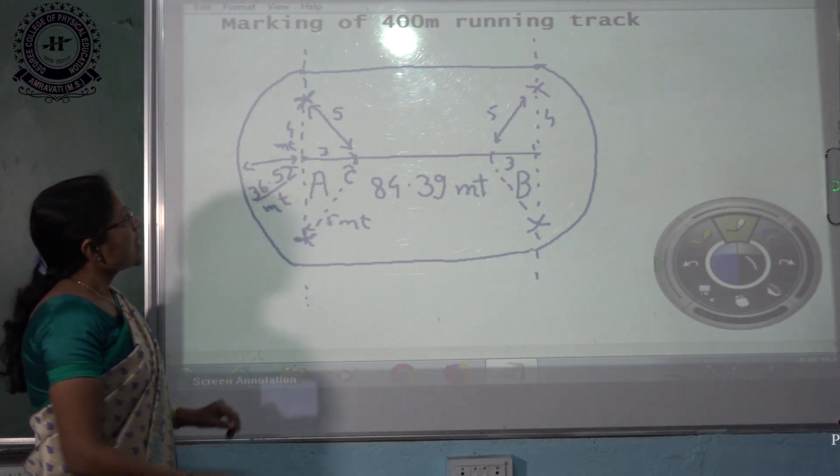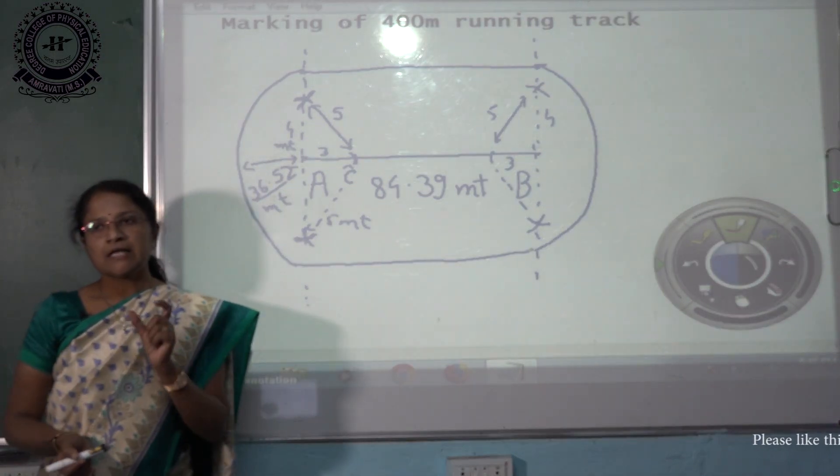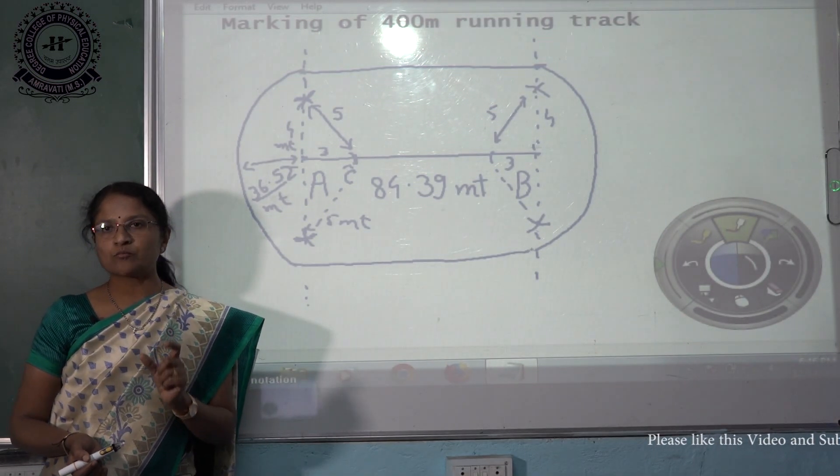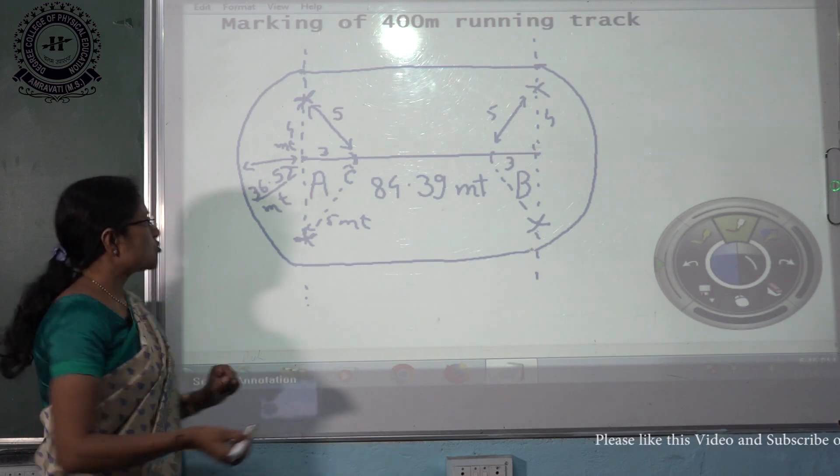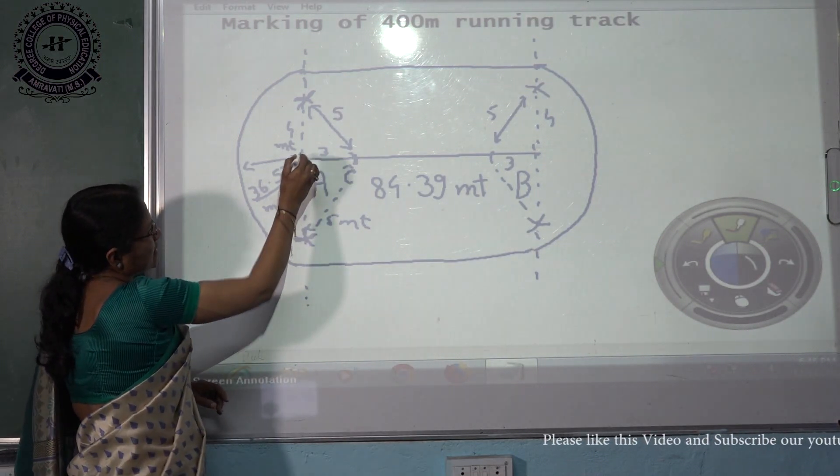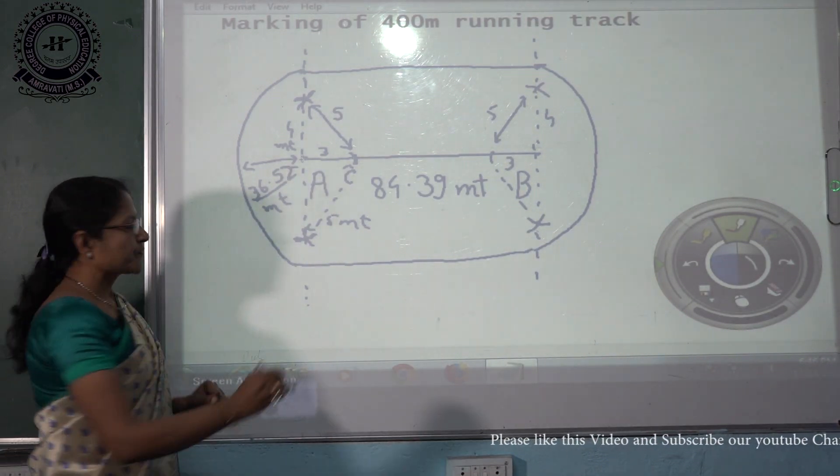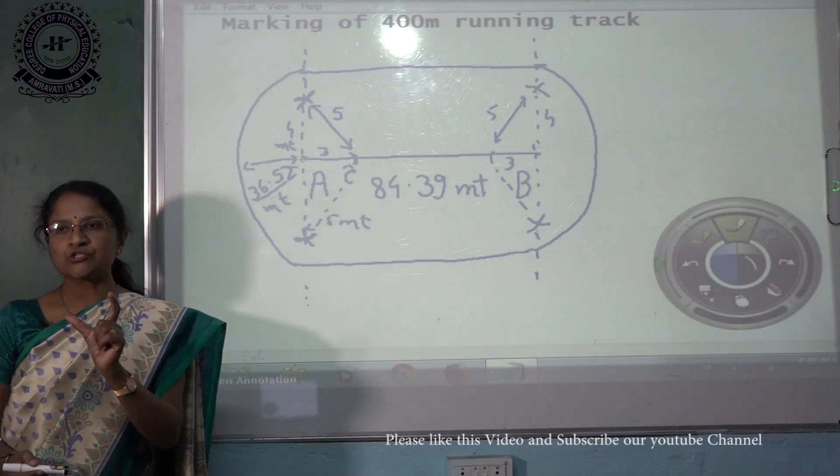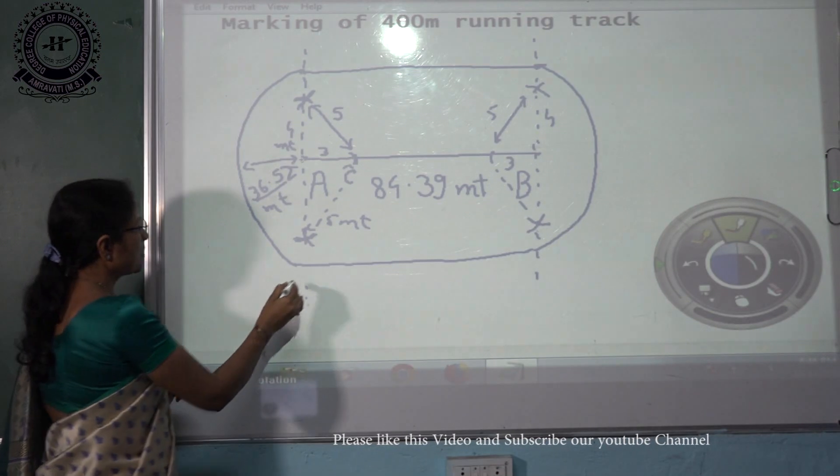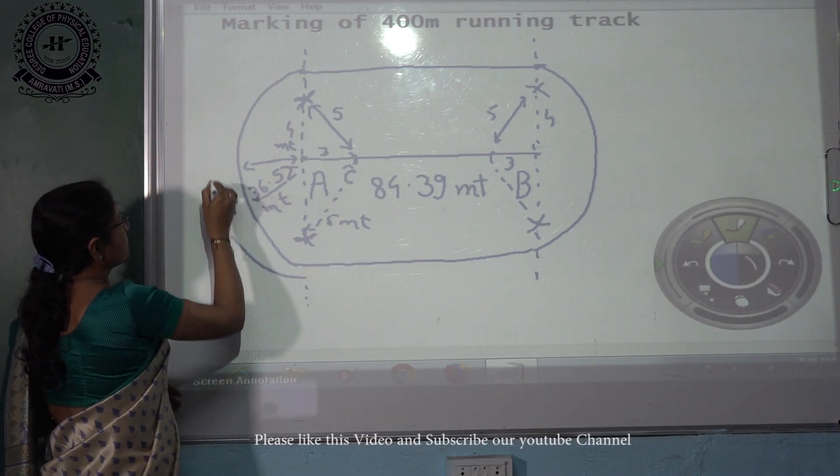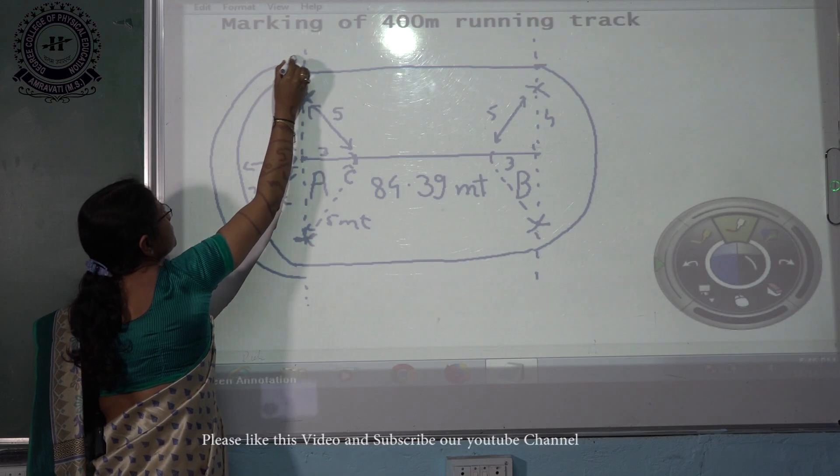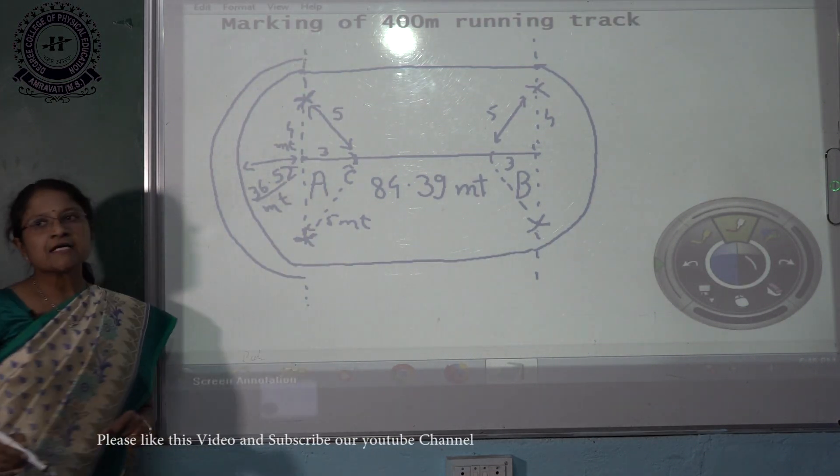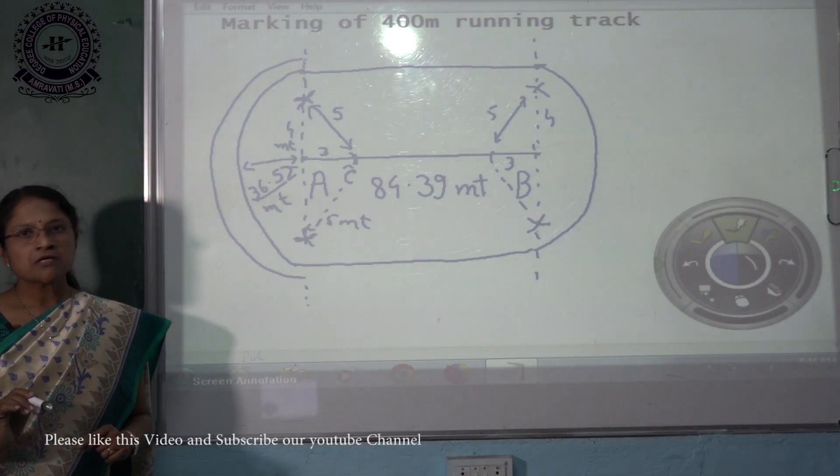Now you know that distance between lanes is 1.22 meters. Lane distance is 1.22 meters. So again, A as a center and taking distance 1.22 meters here, draw this curve. And there are total 8 lanes in our track.